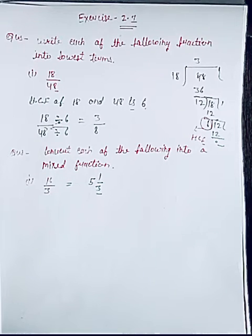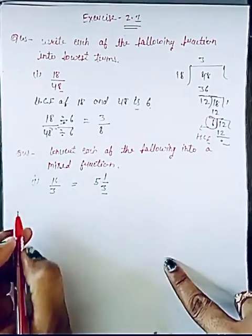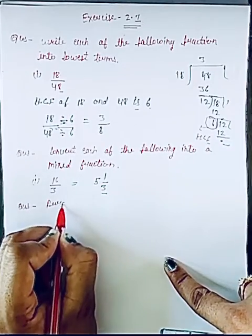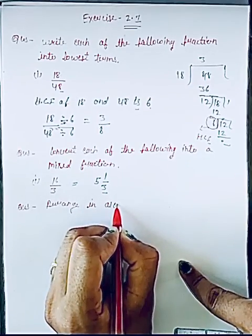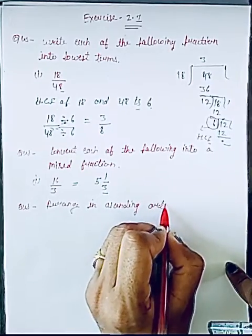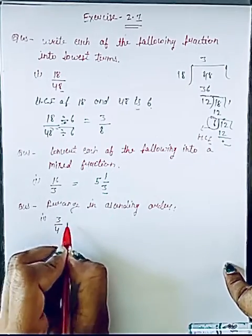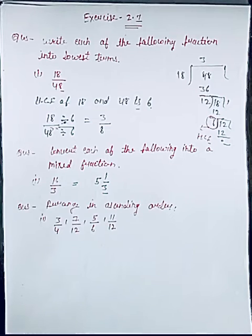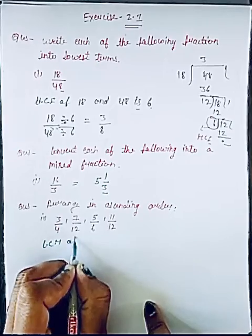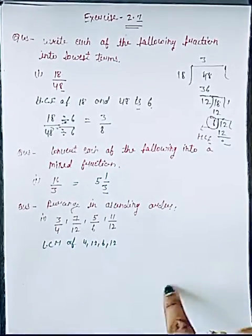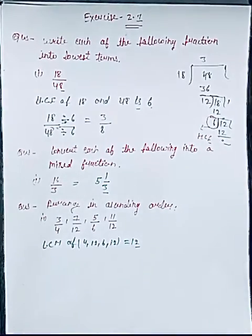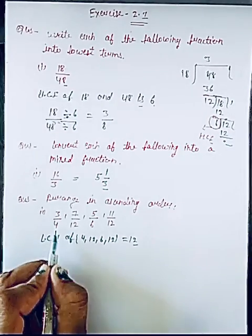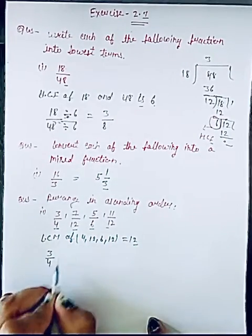The next question is: arrange in ascending order — 3 upon 4, 7 upon 12, 5 upon 6, 11 upon 12. Ascending means increasing order; descending means decreasing order. To arrange in ascending order, we take the LCM of the denominators: LCM of 4, 12, 6, and 12. We need to make all denominators equal to 12.